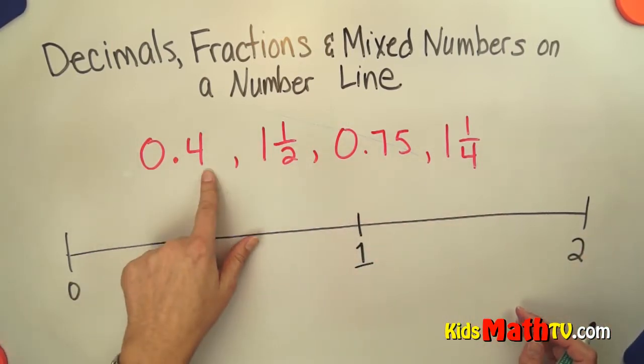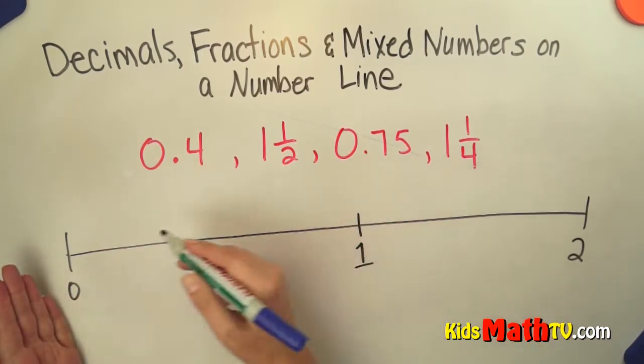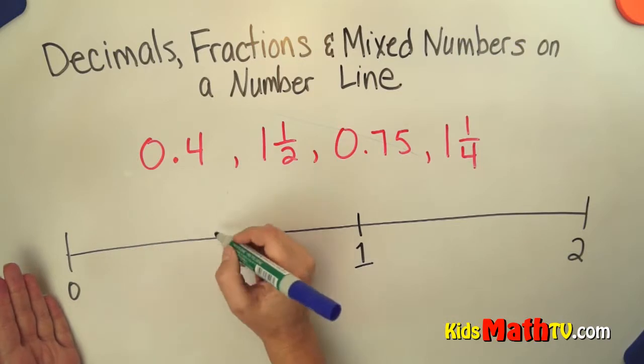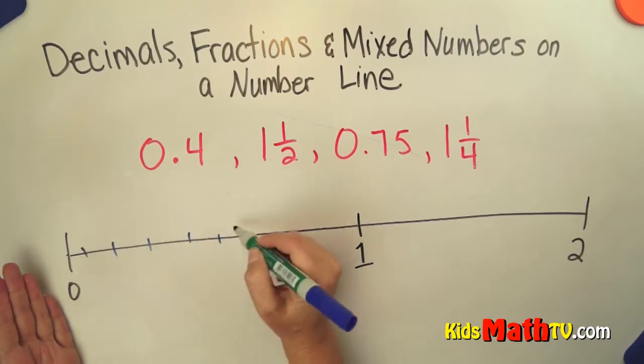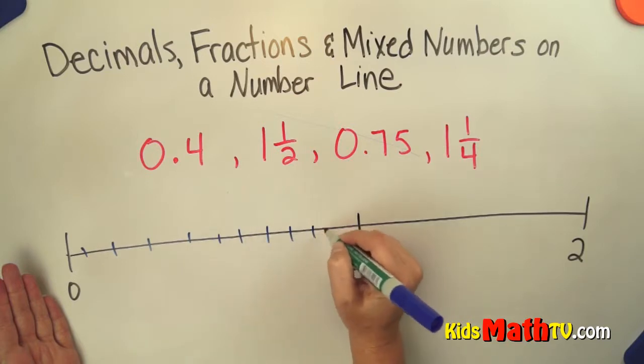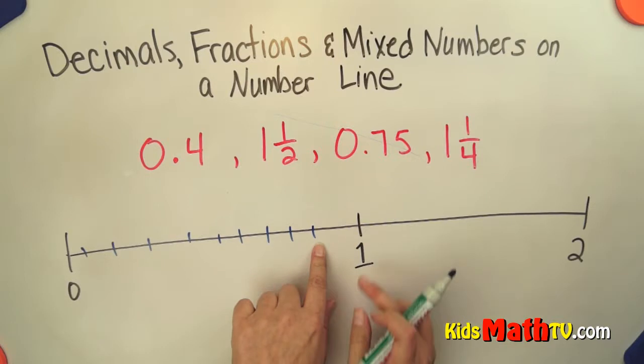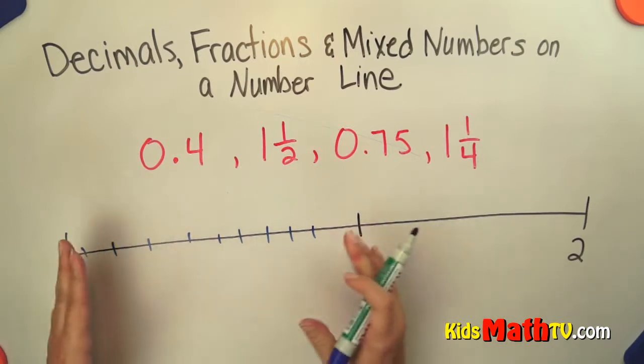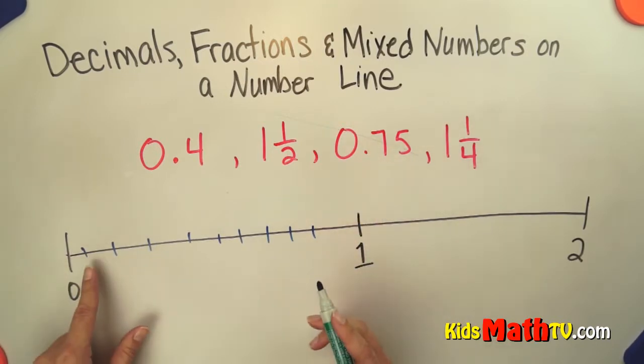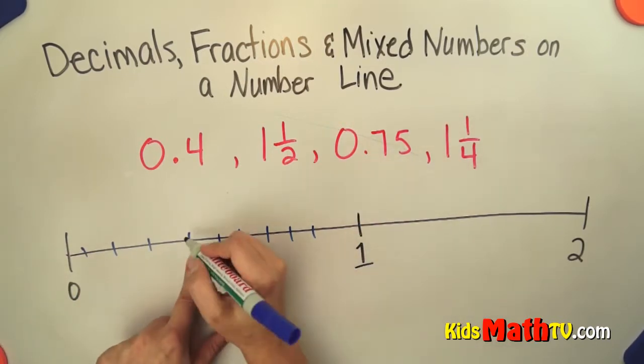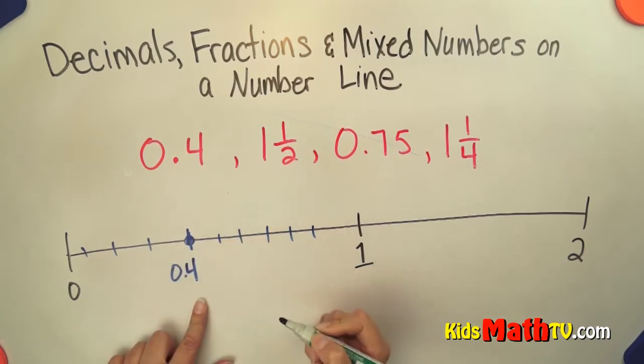So I'm going to start with my 4 tenths. Well, 4 tenths is between 0 and 1. And if I were to split this number line up into 10, well there's ½, then counting the tick marks 1, 2, 3, 4, 5, 6, 7, 8, 9, and another set making 10 total. So you pretend that they're all nice and evenly spaced. So there are 10 tenths, which is 1. So 4 tenths would be 1, 2, 3, 4. Right here is 0 and 4 tenths.